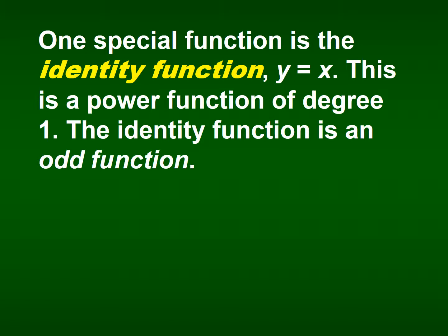There is a special function called the identity function: y equals x. This is a linear function that goes diagonally across the coordinate plane going up to the right. It has a degree of 1, it is a power function, and it is also an odd function because degree 1 is odd.